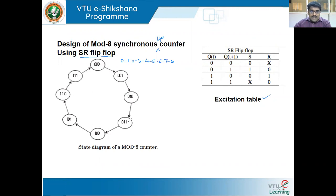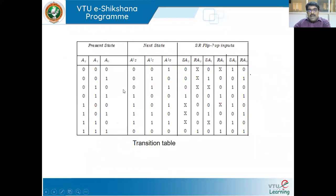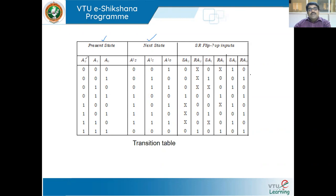The state diagram of the mod 8 up counter goes 0 to 1, 2, 3, 4, 5, 6, 7 and then back to 0. When designing a synchronous counter, we are interested in the present state and the next state. I have taken flip-flops A0, A1, and A2. Present state 0→next 1, 1→2, 2→3, 3→4, 4→5, 5→6, 6→7, 7→back to 0.